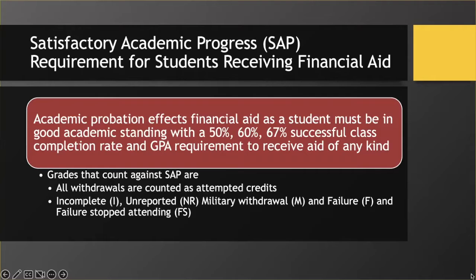Satisfactory academic progress, or SAP, is the requirement that students must meet to receive financial aid. Academic probation impacts financial aid as a student must be in good academic standing, meeting the 50%, 60%, or 67% successful class completion rate and the GPA requirement to receive aid of any kind. Grades that count towards SAP include all withdrawals, incompletes, unreported grades, military withdrawals, failures, and failure to stop attending.